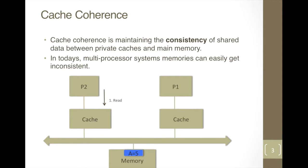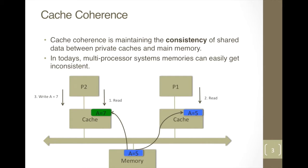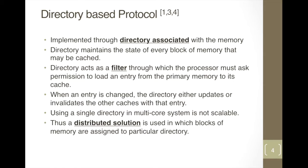The value is stored in P2's private cache. Then P1 instantiates a read operation for address A, and the value is also stored in P1's private cache. After that, P2 instantiates a write operation for address A and writes value 7 in its private cache. Thus the data in P1's cache becomes invalid.